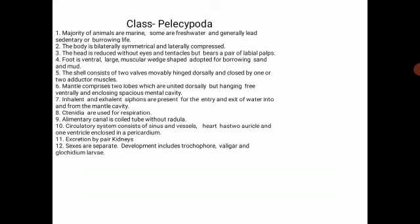The foot is ventral, large, muscular, and wedge-shaped, and is adapted for burrowing in sand and mud. The shell consists of two valves movably hinged dorsally and closed by one or two adductor muscles.